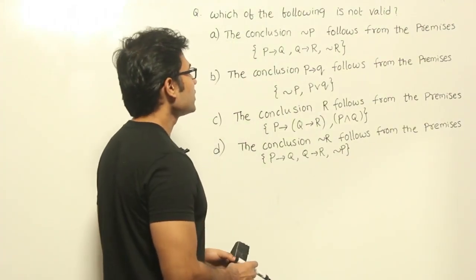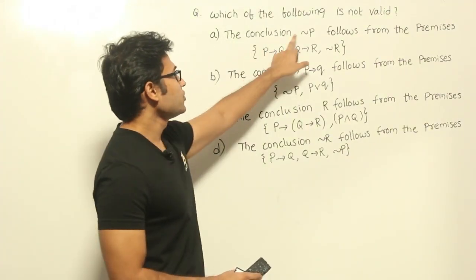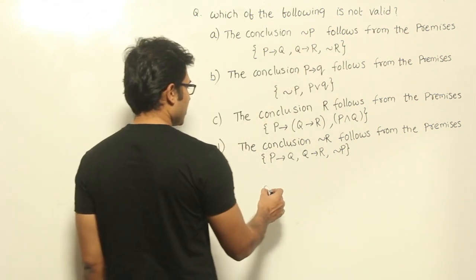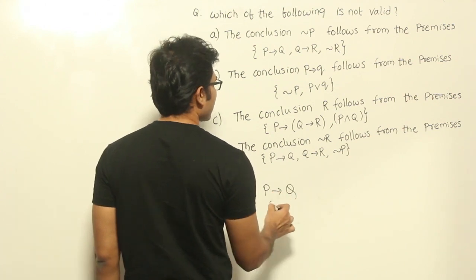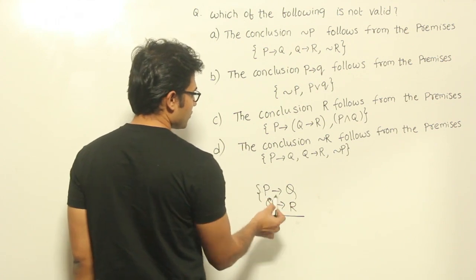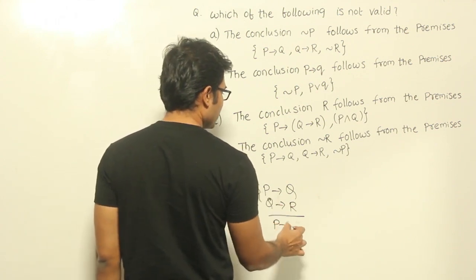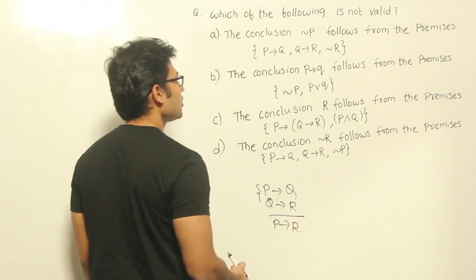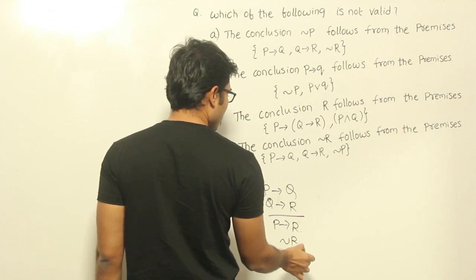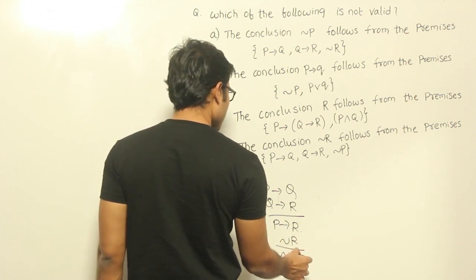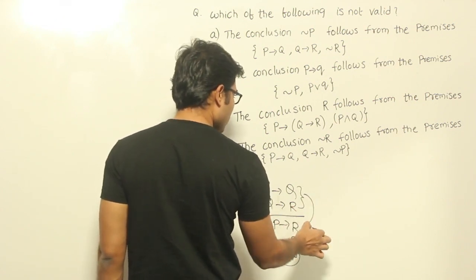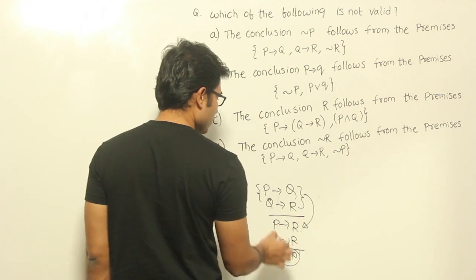Let's see this question: which of the following is not valid, where the conclusion 'negation P' follows from the premises. The premises are P implies Q and Q implies R. Using the transitivity rule we can conclude P implies R. Then with P implies R and negation R, we can conclude negation P using modus tollens.